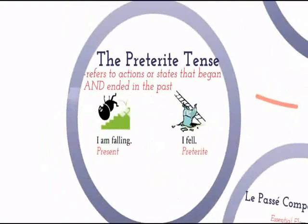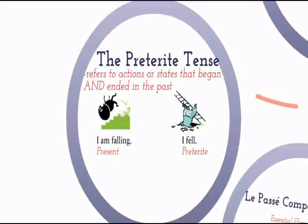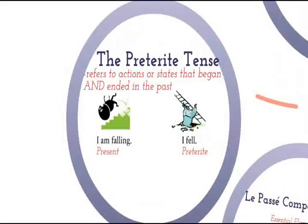The Preterite Tense, Le passé composé, describes actions that began and ended in the past. For example, 'I am falling' is the present tense, but 'I fell' is the Preterite.